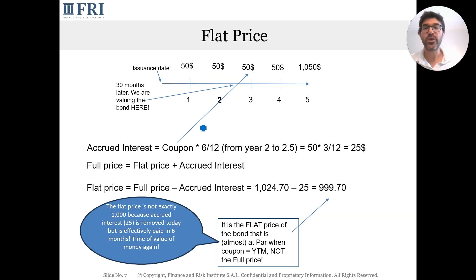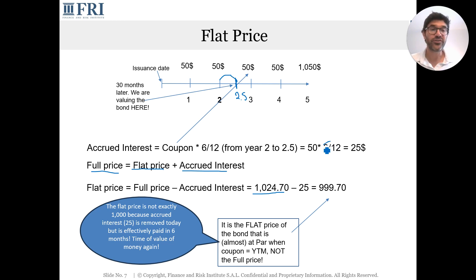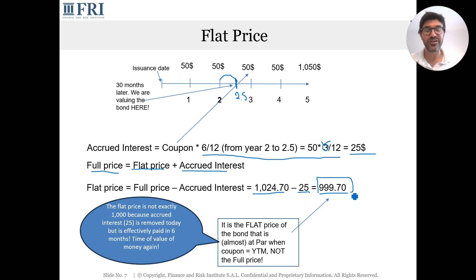Now calculate the flat price. Full price = $1,024.70. Accrued interest = 6/12 × $50 = $25. Therefore, flat price = $1,024.70 − $25 = $999.70.